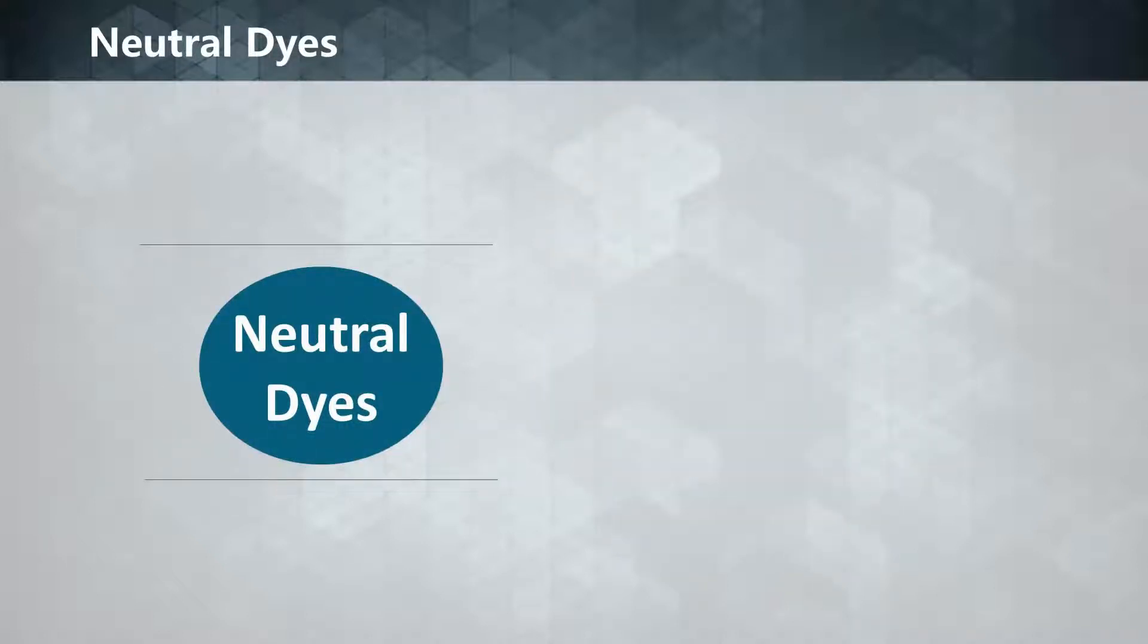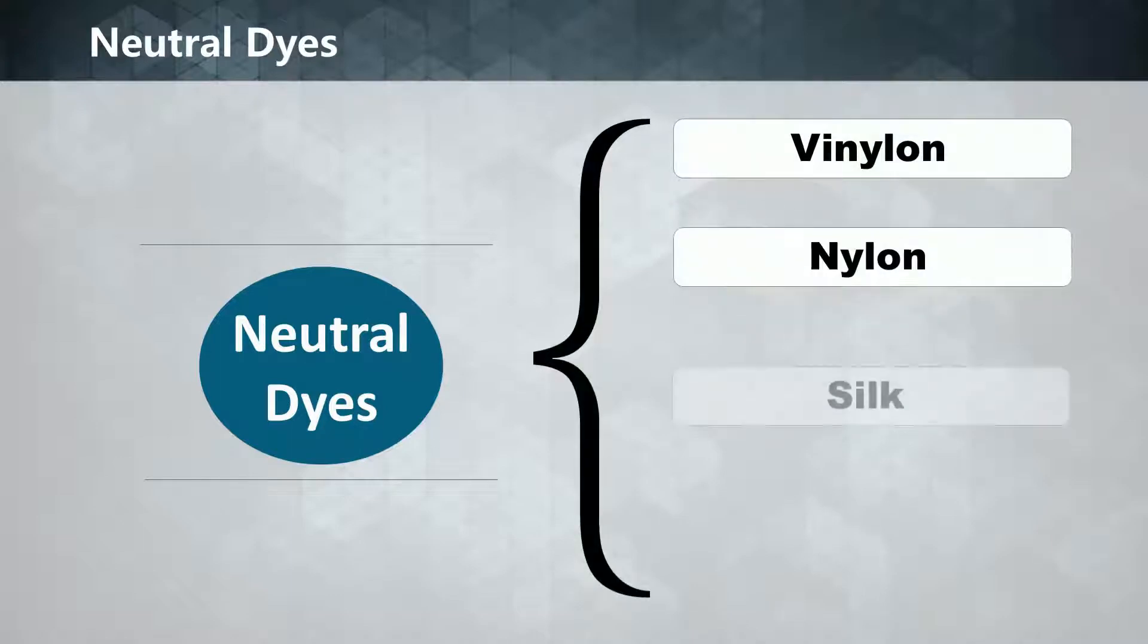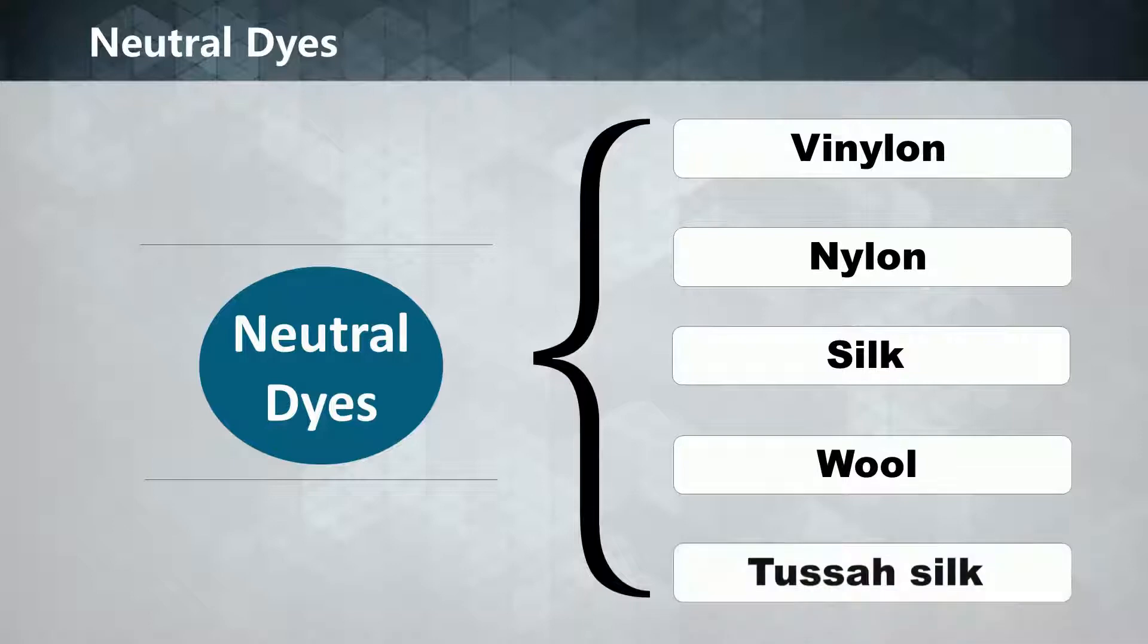Neutral dye is a chromium metal dye. It is mainly chelated by coordination metal atoms, such as neutral orange RL, neutral red GRL, neutral gray 2BL. Neutral dye suits nylon, silk, wool and tussah silk. Neutral dye has a higher fastness.